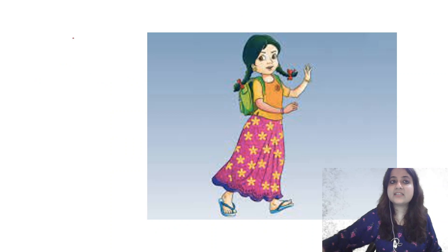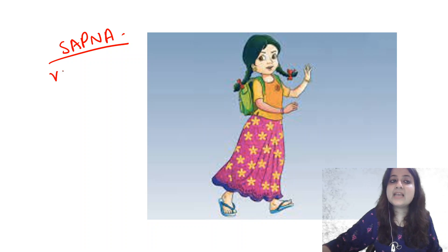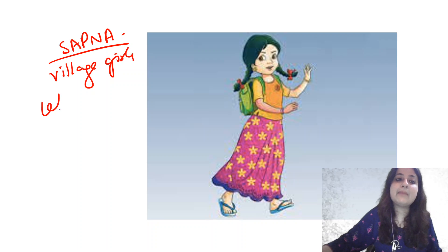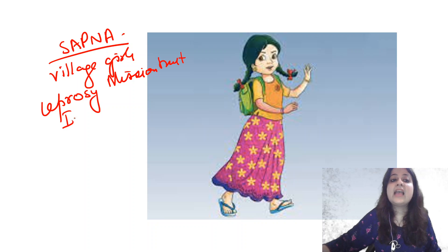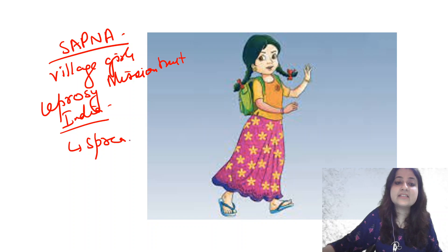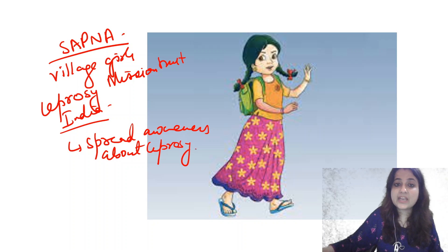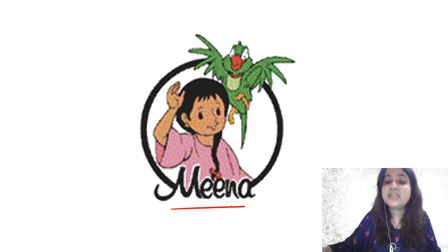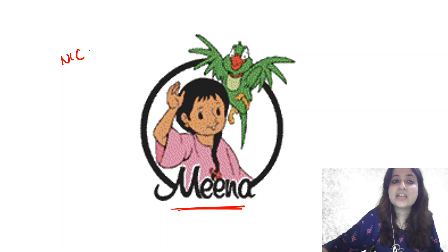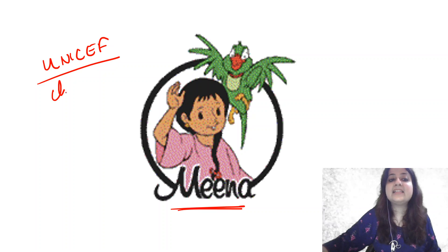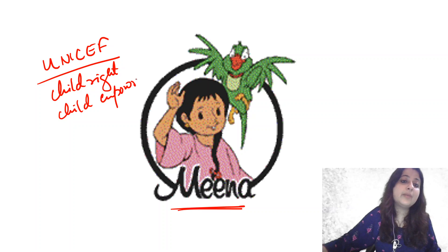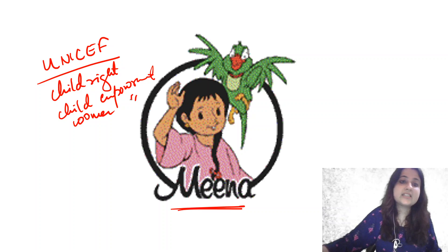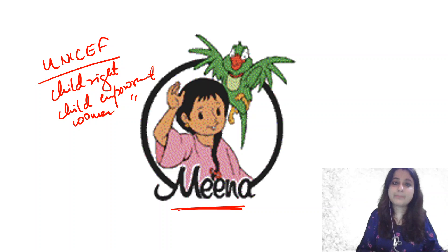The next image is of Sapna — a beautiful village girl created by Leprosy Mission Trust India. This initiative was launched to spread awareness about leprosy. It was based on the very successful UNICEF initiative Meena — another village girl promoting child's rights, child empowerment, and woman empowerment. The concept of Sapna was adopted from Meena. Meena is depicted with a parrot, promoting freedom.